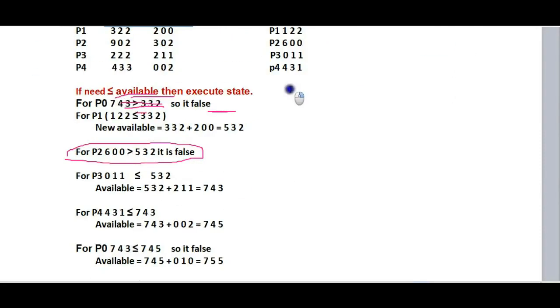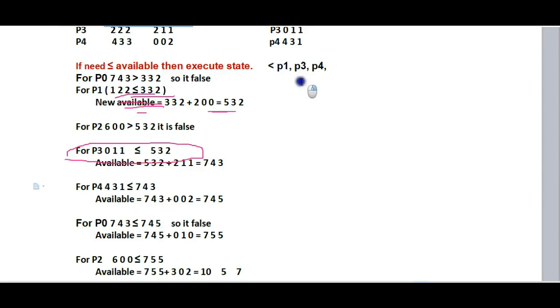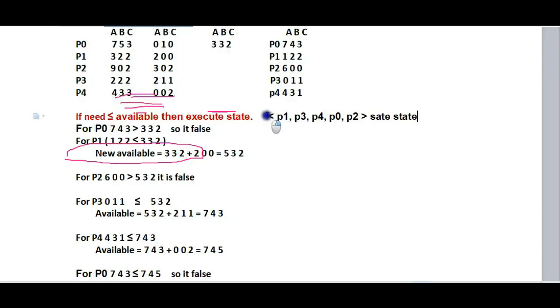Therefore, the safe sequence is: P1, then P3, then P4, then P0, then P2. This is the safe state sequence. The system is in a safe state because we found a valid execution order where all processes can complete.